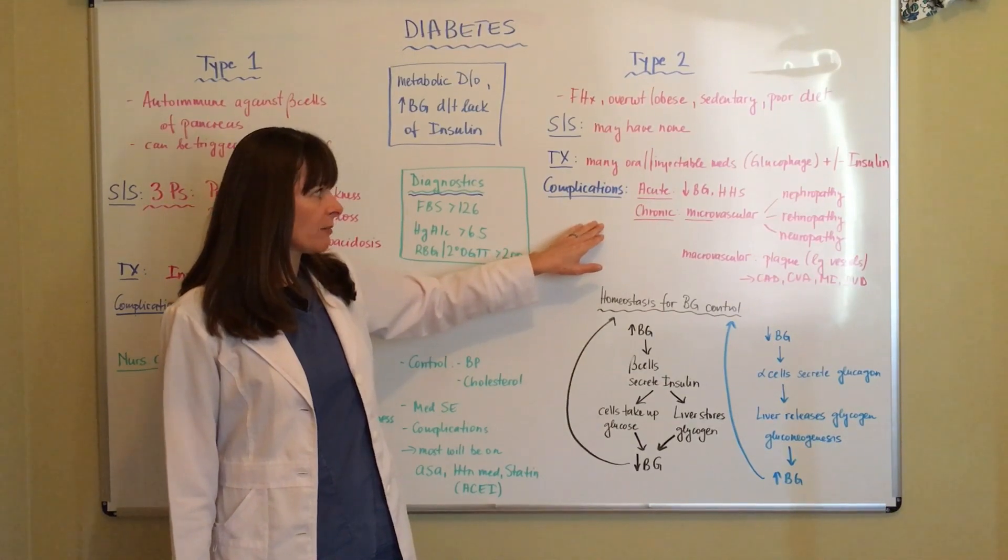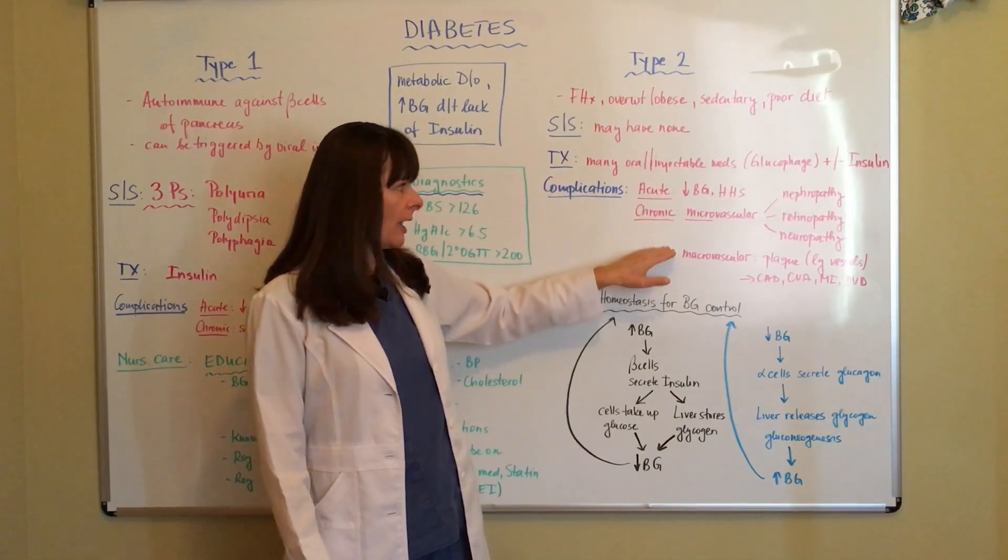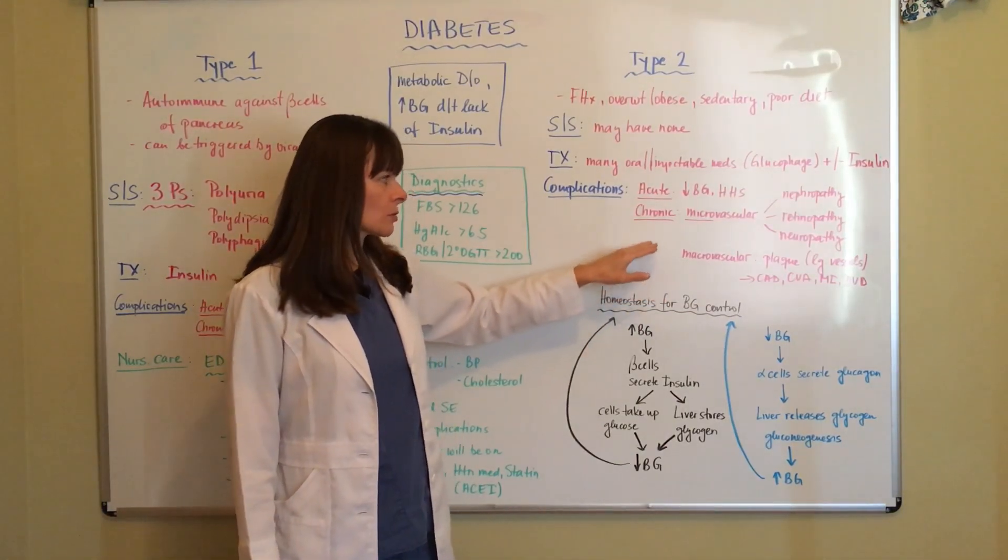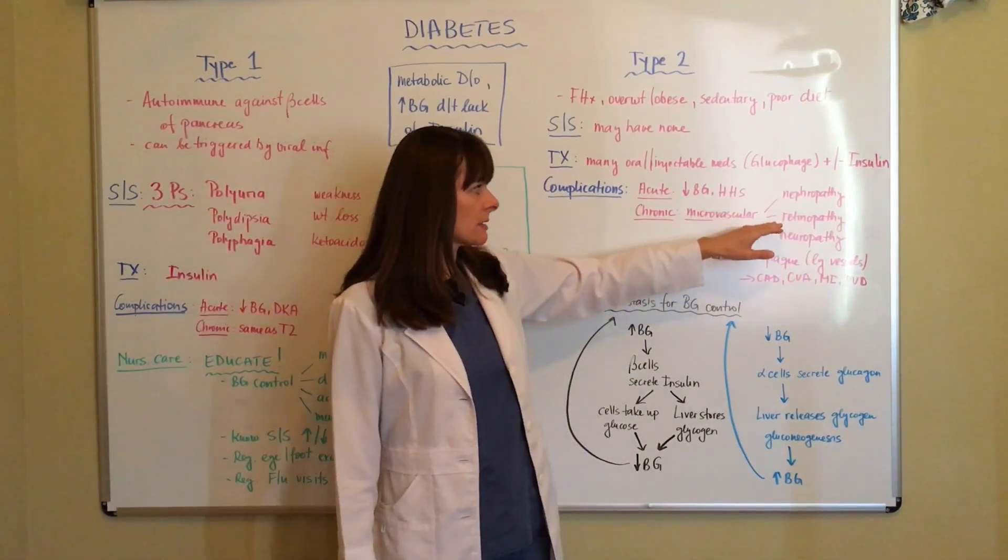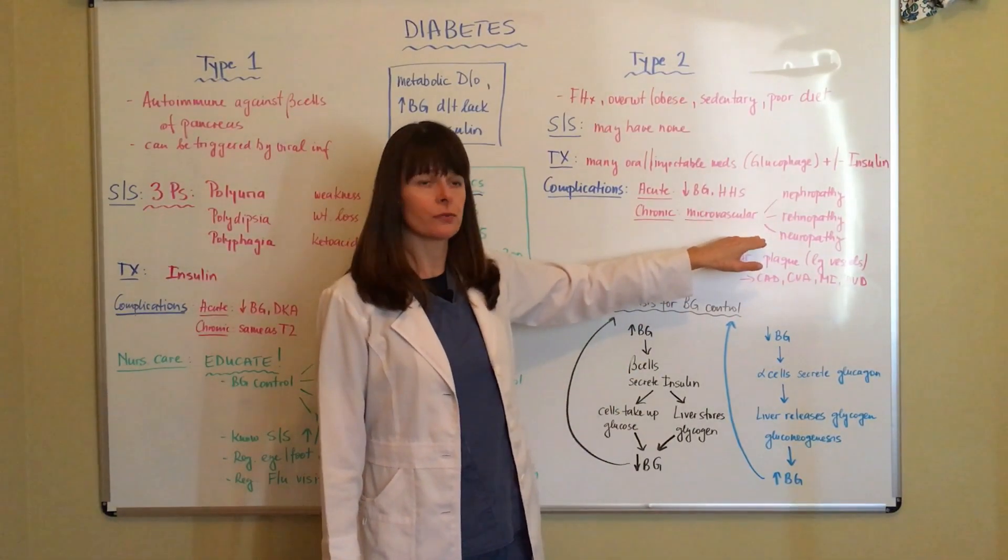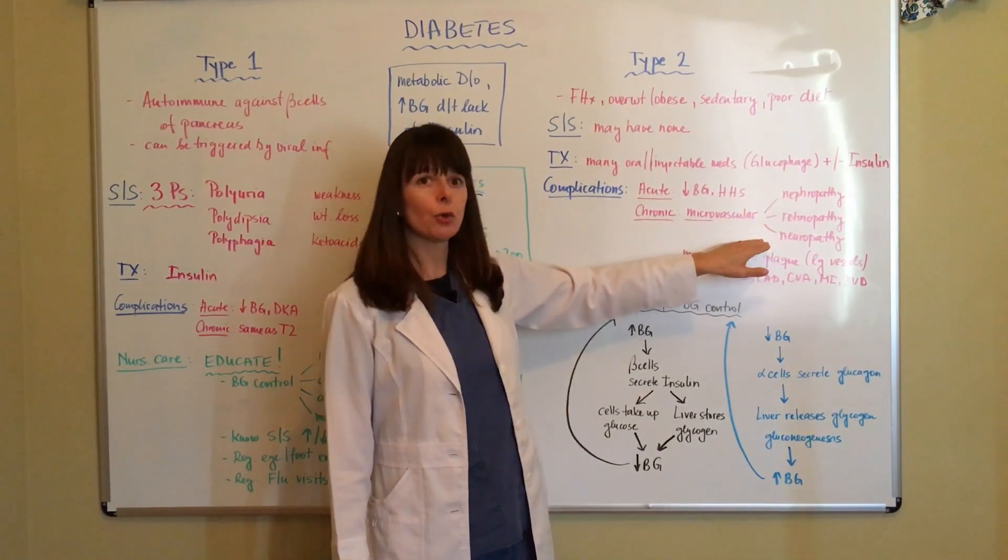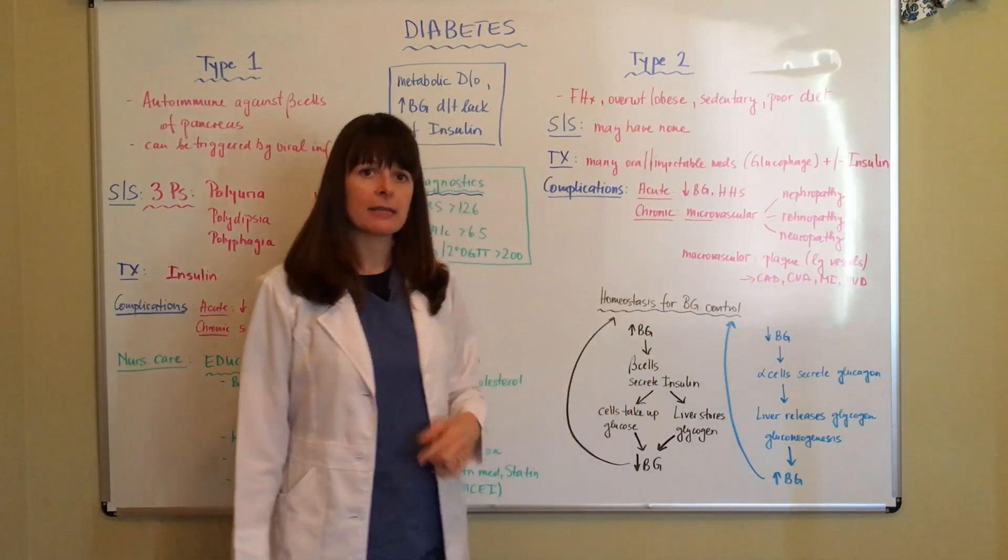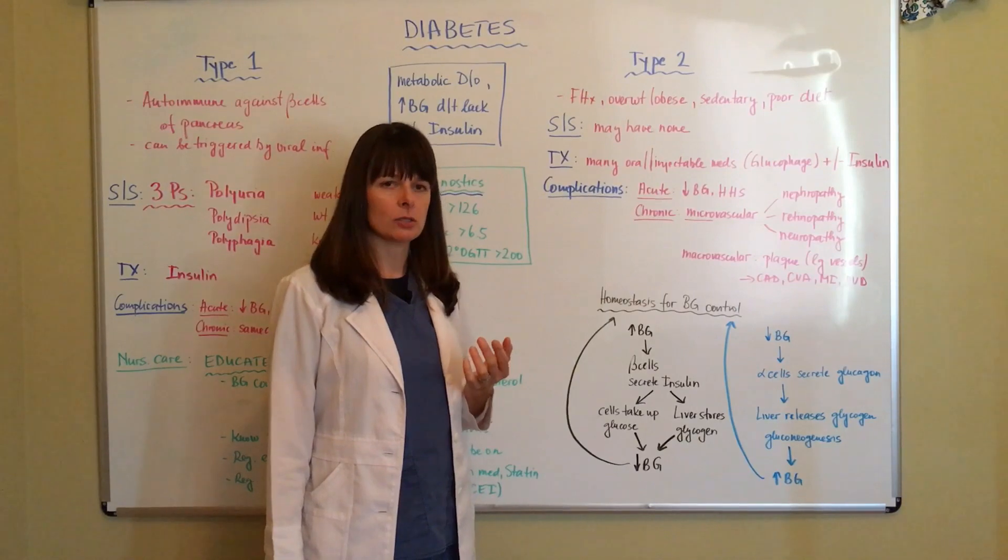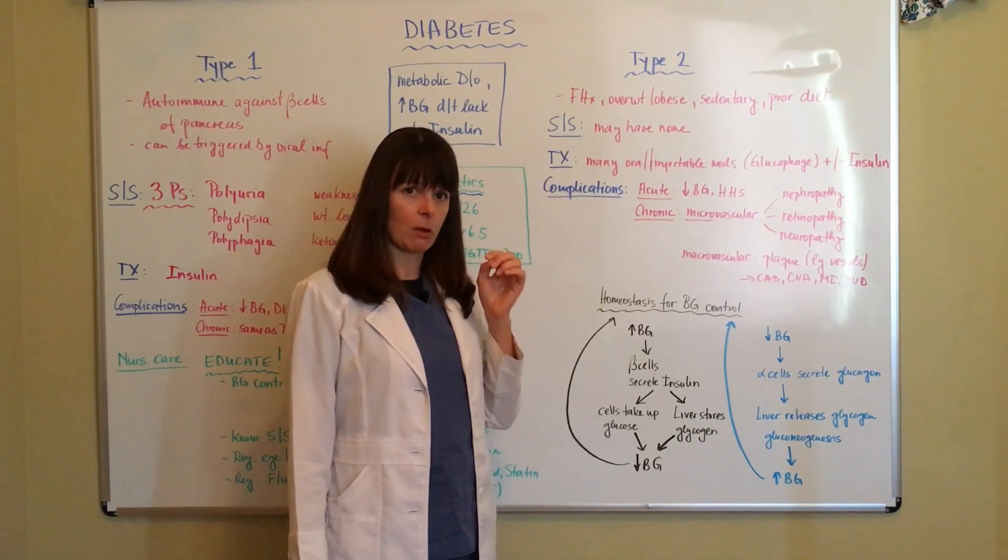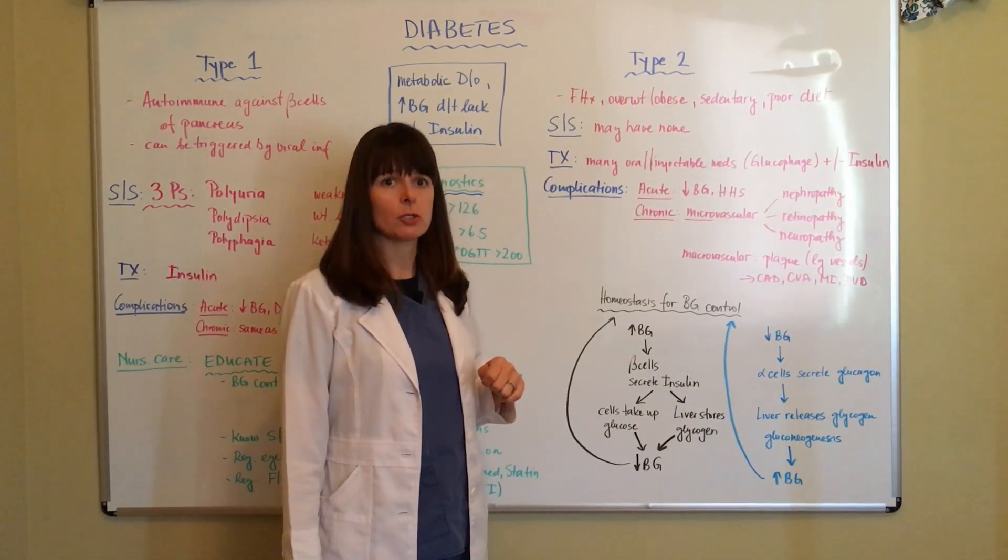Chronic complications of diabetes, which applies to type 1 as well as type 2, are micro and macrovascular. Microvascular affects the very small blood vessels of the kidneys, eyes, and nerves. So there will be nephropathy, retinopathy, and neuropathy. That basically happens because there are these large glucose molecules circulating in the patient's bloodstream affecting the kidneys, the small blood vessels of the eyes, as well as the nerves, and can cause some damage there over time.